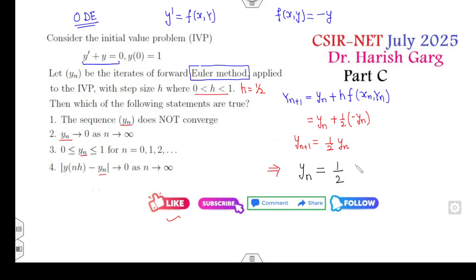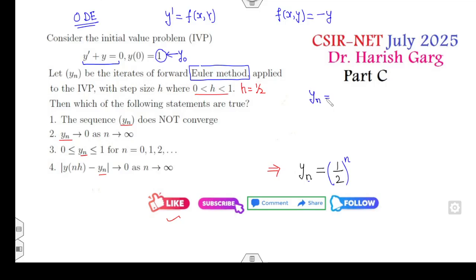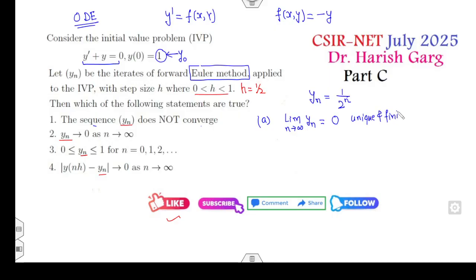Using the recurrence with y_0 = 1, we get y_n = (1/2)^n. Looking at the options: taking the limit as n → ∞ gives 0, which is unique and finite, so the sequence is convergent — option 1 (does not converge) is cancelled. Option 2 correctly states the limit is 0. Option 3 is also correct since y_n always lies between 0 and 1.